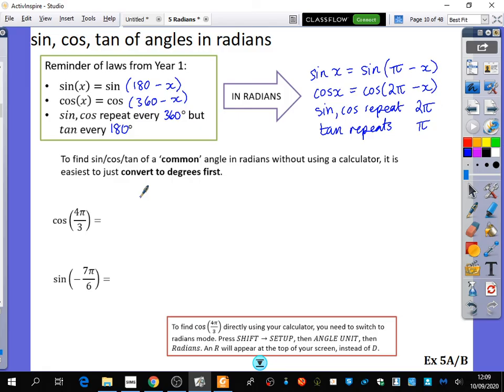45? 90? 60? 30? 120? Ones that are multiples of those. So you can see here, this is going to be a common angle because we've got 4π/3. So you can either do this in radians or you can do it in degrees. Let's do it first of all in degrees.